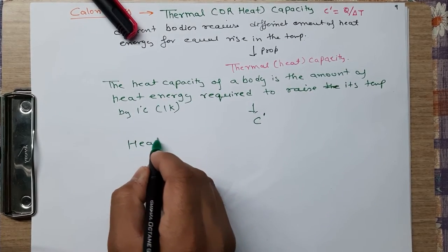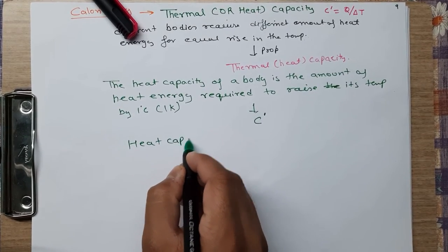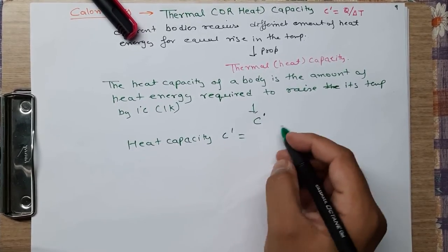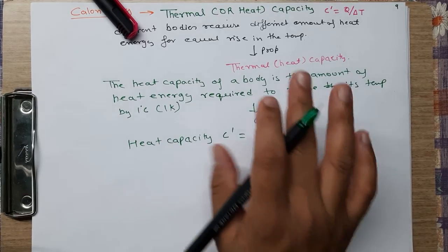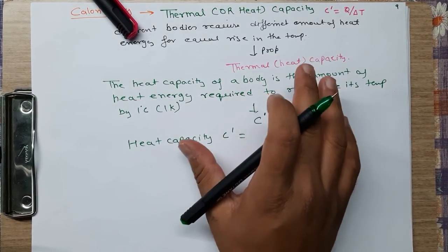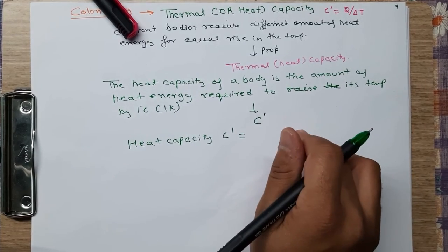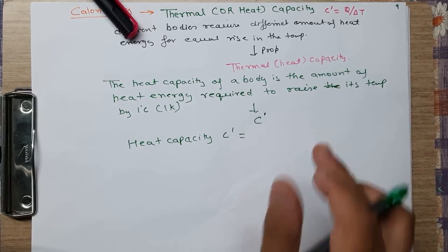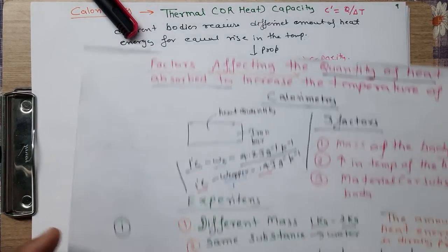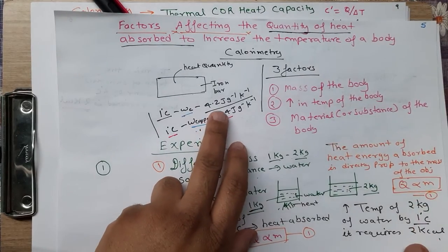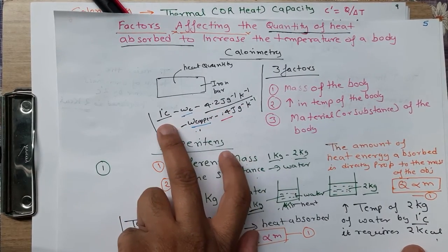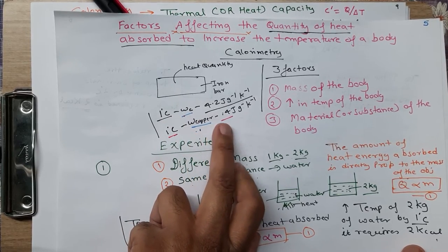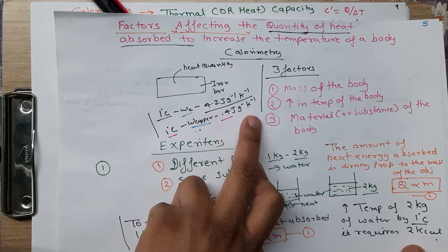Heat capacity C prime equals the amount of heat supplied to a body to increase its temperature by 1 degree. For example, water requires 4.2 joule per gram per Kelvin to increase by 1 degree Celsius, whereas copper requires just 0.4 joule per gram per Kelvin.